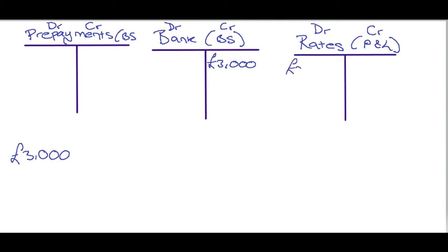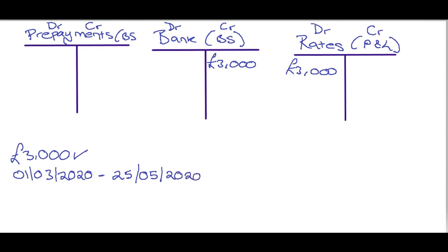We're going to put £3,000 in the profit and loss. When we look at the invoice, it is for the 1st of March 2020 to the 25th of May 2020. So we don't have whole months here — we've got days — so we need to work this out in days. An easy way to remember the number of days in each month: take your knuckles and put them together. Your knuckles are 31 days and the gaps between them are shorter months.